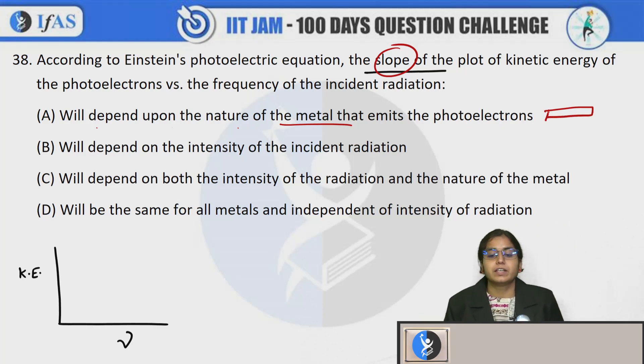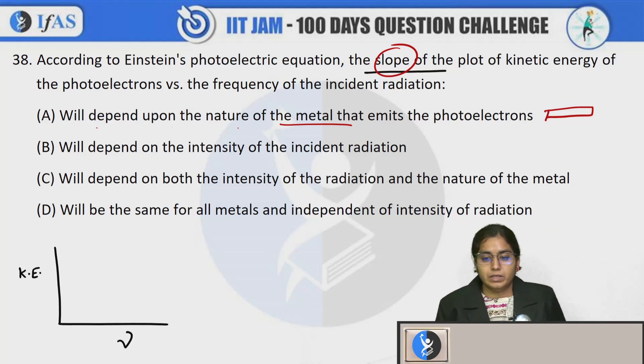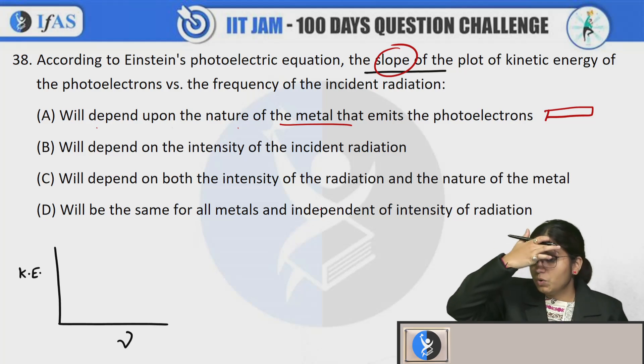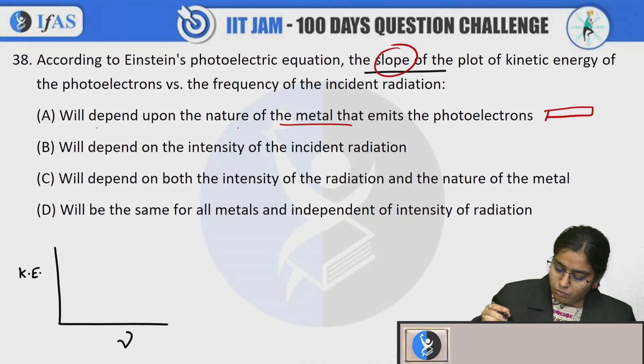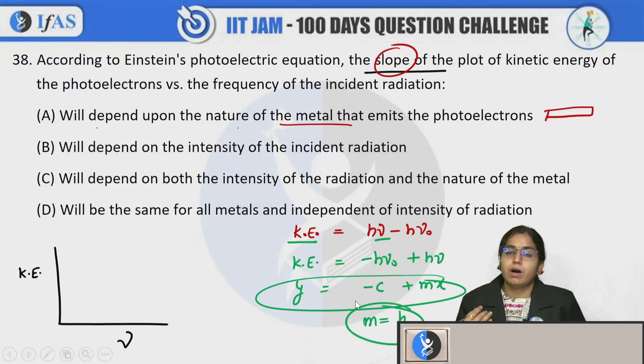First of all we should know what is the slope. They are asking - slope will depend upon the nature of metal that emits the photoelectron, will depend on the intensity of the incident radiation, will slope depend on both intensity and nature of metal, will be same for all metals and independent of intensity. See, kinetic energy is equals to h nu minus h nu naught. If you compare this - y axis is equals to plus h nu. So y is equals to minus c plus mx, or mx minus c we can write. So straight line curve will be - slope is nothing but h.